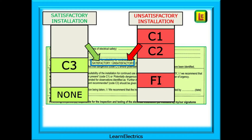The outcome of an electrical installation condition report can be either satisfactory or unsatisfactory. If the observation codes are only C3, or there are no observations, then the installation is satisfactory for continued use. But if there are any C1, C2 or FI observations then the condition of the installation is automatically deemed unsatisfactory, meaning that remedial action is required. There is no minimum number of C1s, C2s or FIs — just one will make it unsatisfactory.